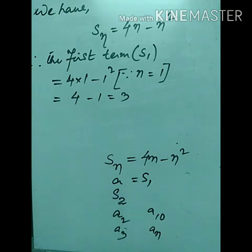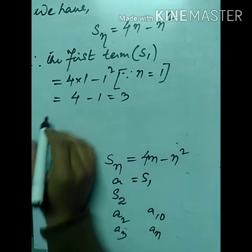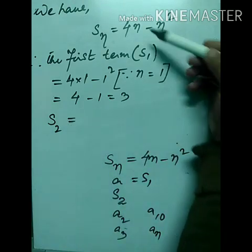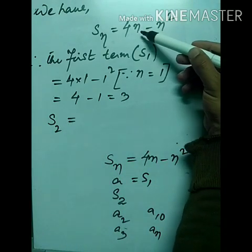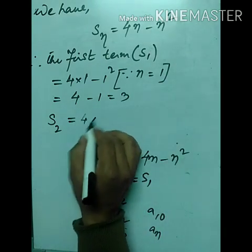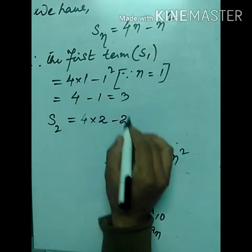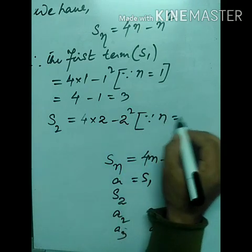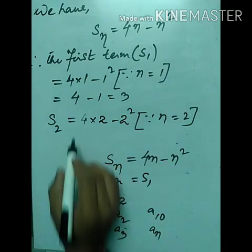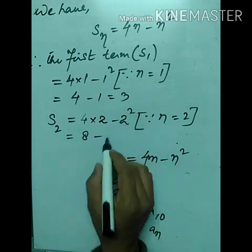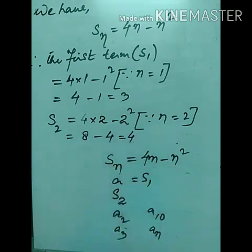Next, the sum of the first two terms S₂: replace n = 2, so S₂ = 4×2 − 2² = 8 − 4 = 4.